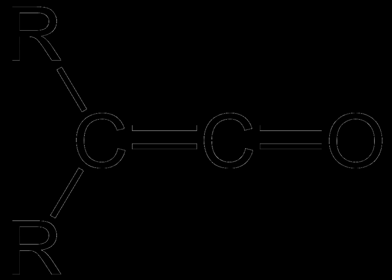Ketenes were first studied as a class by Hermann Staudinger. Ketene, the simplest ketene, is produced on a large scale industrially for use in the production of acetic anhydride. It can also be generated by pyrolysis of acetone.